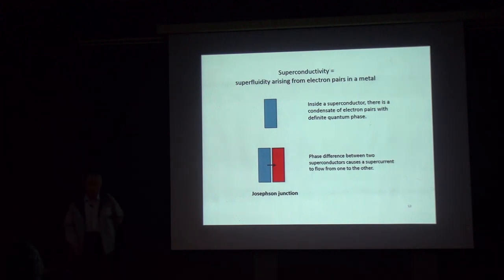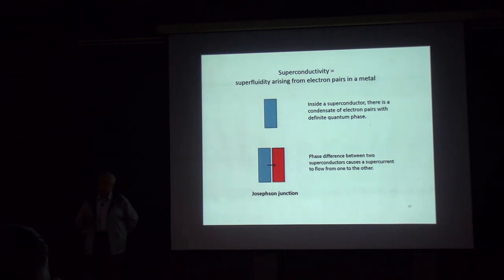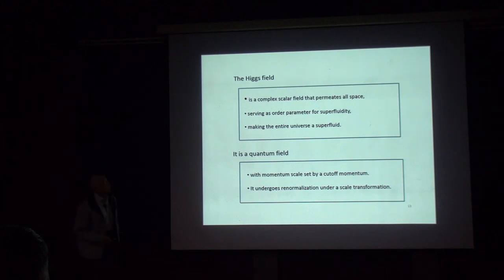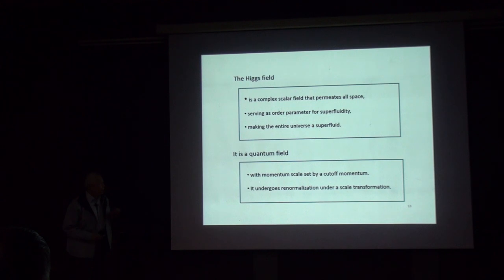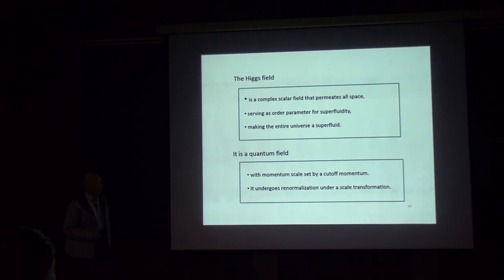Superfluidity is a very common and useful effect in everyday life, but it is a purely quantum effect due to the coherence of the quantum phase, with no classical analog. The Higgs field is a complex scalar field that permeates all space and satisfies all the parameters for superfluidity, making the entire universe a superfluid. As a quantum field, it has a momentum scale set by a cutoff, and when you change this cutoff, the field undergoes so-called renormalization.